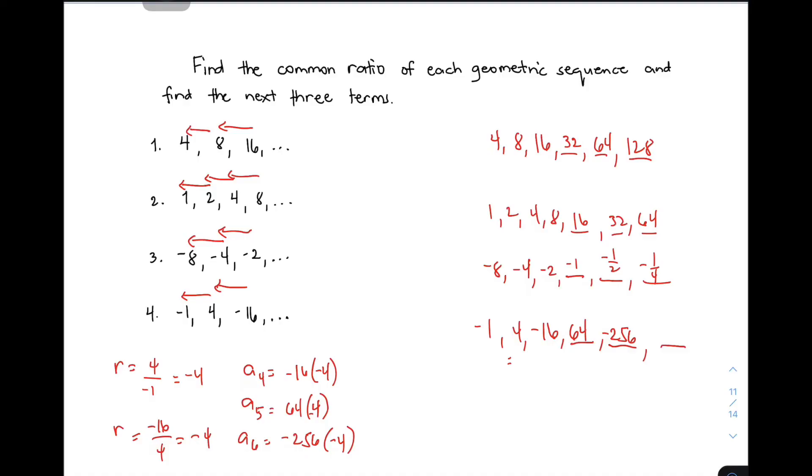For a_6, multiply -256 by -4. The answer is positive. 200 times 4 is 800, 50 times 4 is 200 (making 1000), and 6 times 4 is 24. This gives 1,024. These are the three terms: 64, -256, and 1,024.